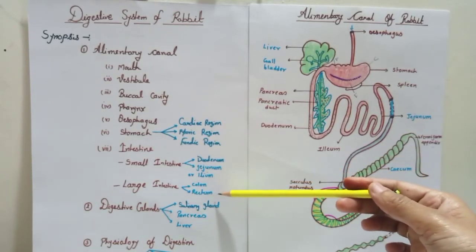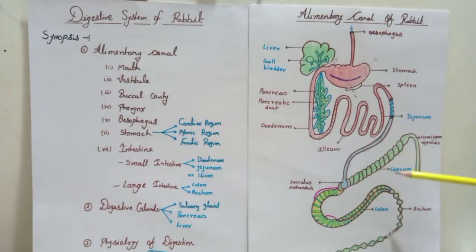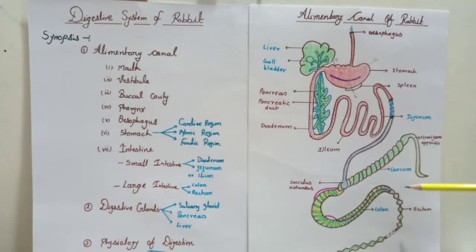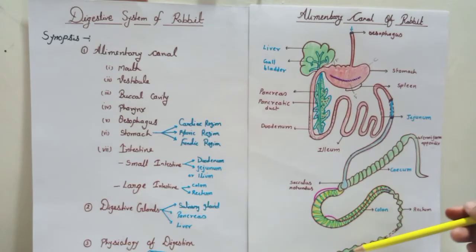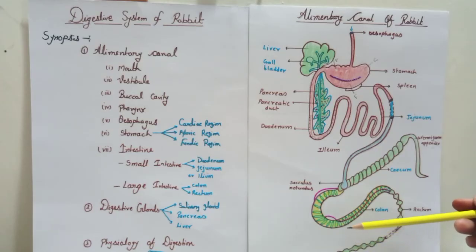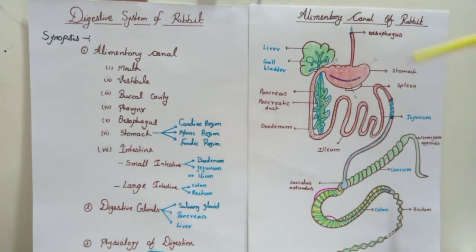In the large intestine there are two parts — colon and rectum. The colon is a longitudinal tube-like structure that has villi to absorb water from the undigested food, and it opens to the rectum. The rectum is a large swollen part responsible for the movement of waste products. It opens to the anus, which is the external aperture guarded by a sphincter through which undigested matter passes out.